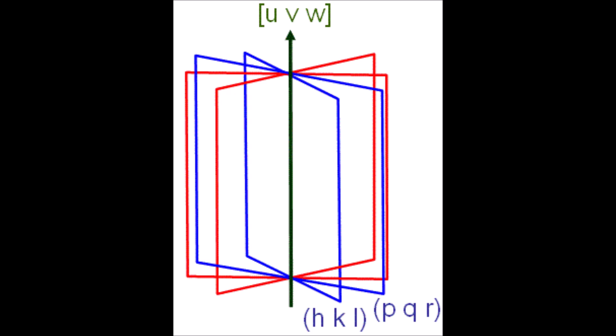So a zone axis is simply a crystallographic direction that is contained by at least two unique crystallographic planes. What we see here in this schematic is that we have these four unique planes.